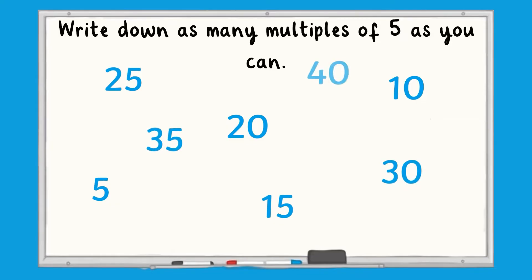35, 40, 45, 50, 55 and 60. Or maybe you multiplied some bigger numbers by 5. For example, 100 multiplied by 5 is 500. Therefore, another multiple of 5 would be 500.